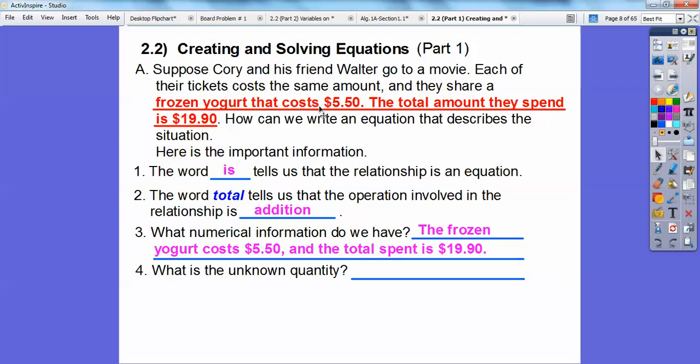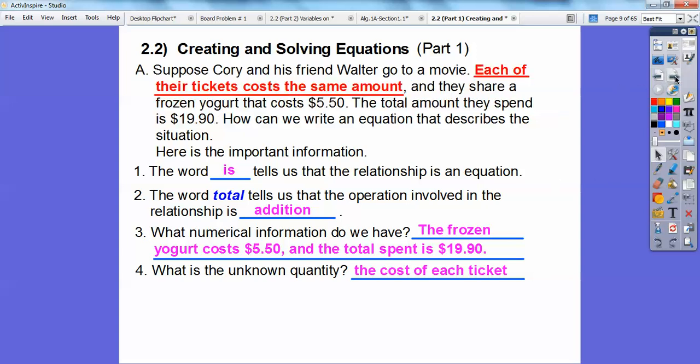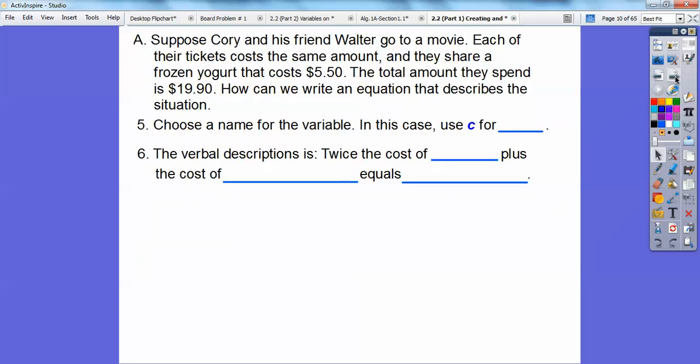You ever see the word is that just means equal sign. So the word total, this word right here total, tells us that this operation involving is going to have some addition involved in it. What numerical information do we have? Well we have this fact right here that the frozen yogurt costs $7.50 and the total amount of money that they spent is $19.90. And what is the unknown quantity? The unknown quantity is the movie tickets, how much the movie tickets are, the cost of each ticket.